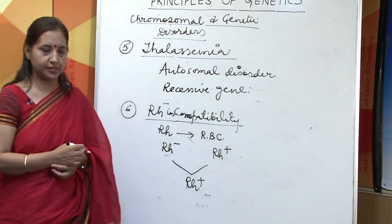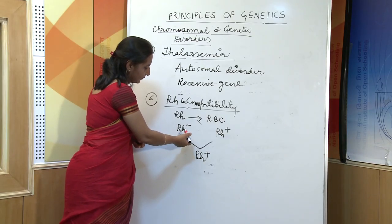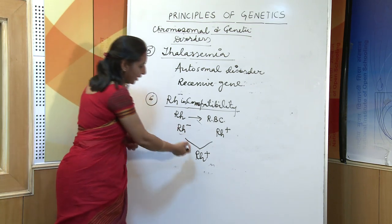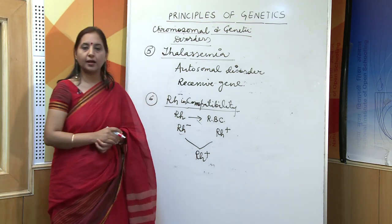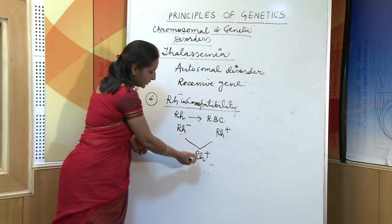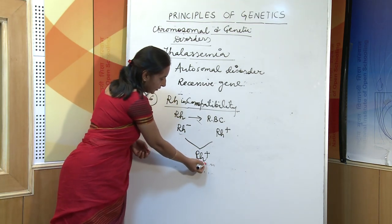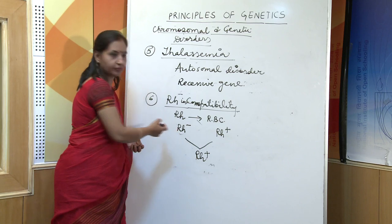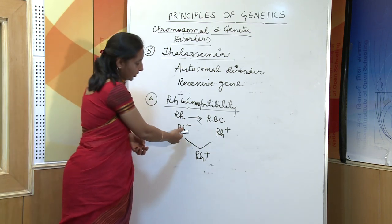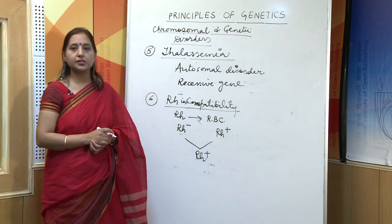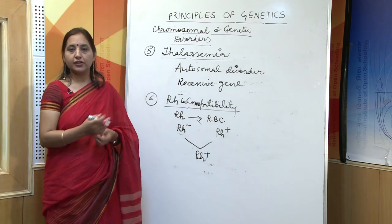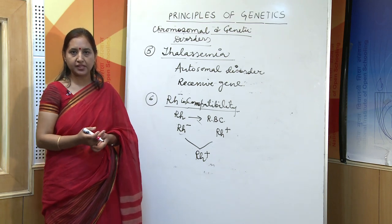The next disorder is Rh incompatibility. Rh is the protein or antigen present on the surface of RBCs. If an Rh-negative mother marries an Rh-positive father, they may bear a child who is Rh-positive. There may be mixing of blood, and as a result the antigen will boost the immune system of the mother and antibodies will be produced in the mother's body, leading to Rh incompatibility.